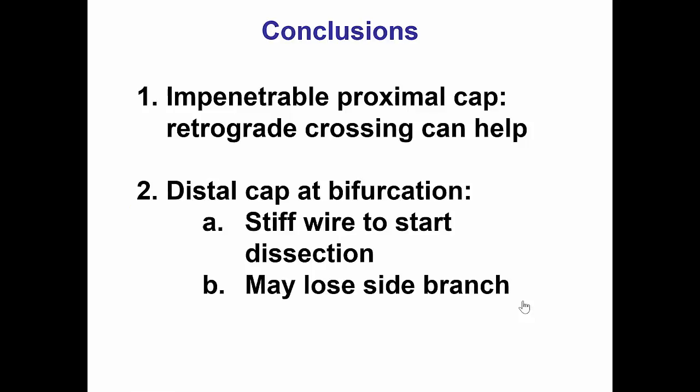This case has several lessons. The first is that the retrograde approach can be an effective tool in cases of impenetrable proximal cap. The second is that a bifurcation at the distal cap can be very hard to navigate. In our case this was solved by advancing a Confianza Pro 12 wire to start a dissection plane, then advancing a polymer-jacketed wire — initially a Pilot 200 and then a Fielder XT — knuckled all the way to the proximal cap at the RCA ostium.